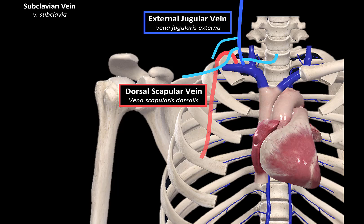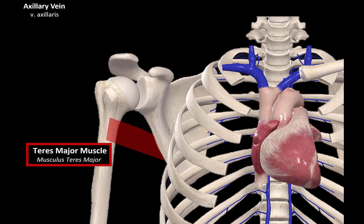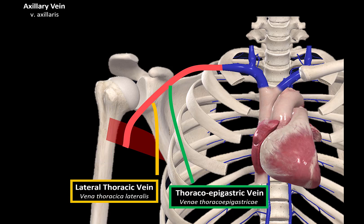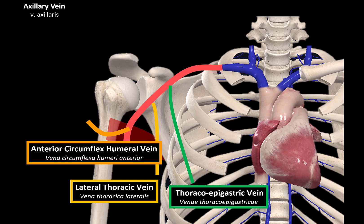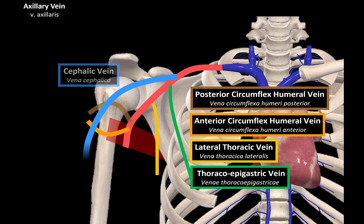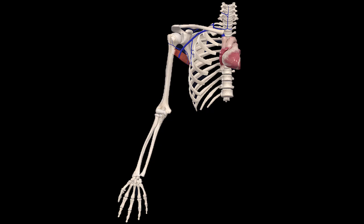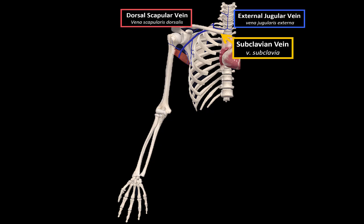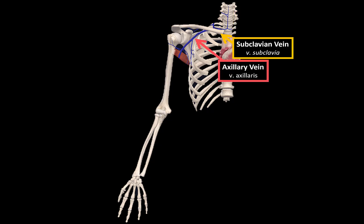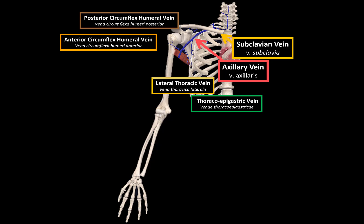Now let's go ahead and cover the axillary vein. The axillary vein starts at the border of the teres major muscle and ends at the subclavian vein. Its tributaries correspond with the branches of the axillary artery, like the thoracoepigastric vein, the lateral thoracic vein, the anterior circumflex humeral vein, and the posterior circumflex humeral vein. It also has tributaries special to the axillary vein, like the cephalic vein. So the subclavian vein has the external jugular vein and the dorsal scapular vein draining into it. The axillary vein has the anterior and posterior circumflex humeral veins, the lateral thoracic and thoracoepigastric veins, as well as the cephalic vein.